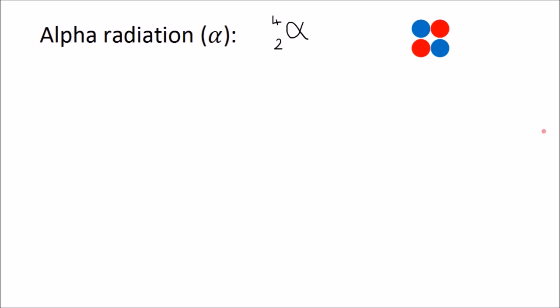Alpha radiation is where the nucleus emits an alpha particle, which is made up of two protons and two neutrons. Therefore, after alpha emission, the mass number and the atomic number both change because the nucleus has lost two protons and two neutrons.